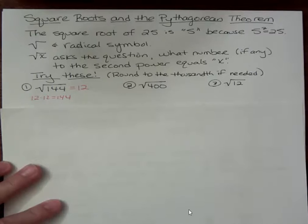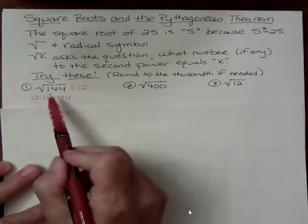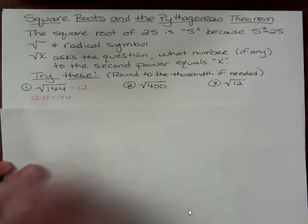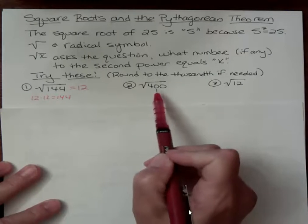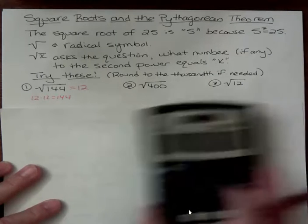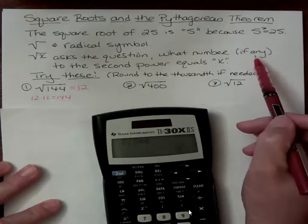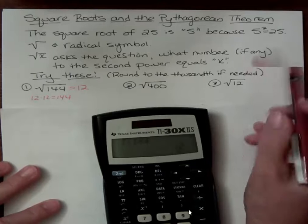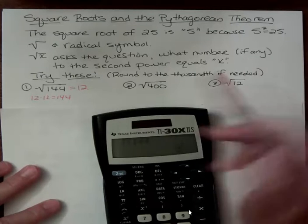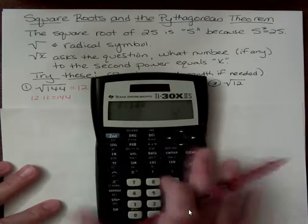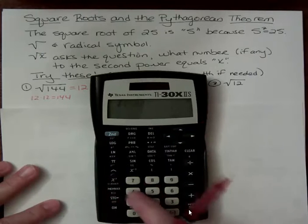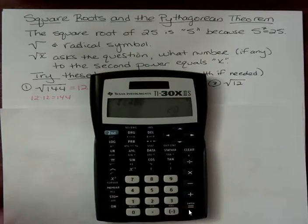What number to the second power would equal this? This is called the radicand, by the way. So now we're saying, okay, what number to the second power would equal 400? Why did I say if any up here? Well, when you say if any, it's because you can't have a negative under a square root like that. So sometimes it's not possible to do it with real numbers.